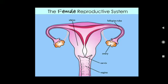When a girl is born, the ovaries already contain thousands of immature follicles. On reaching puberty, some of these start maturing. One egg is produced every month by one of the ovaries.